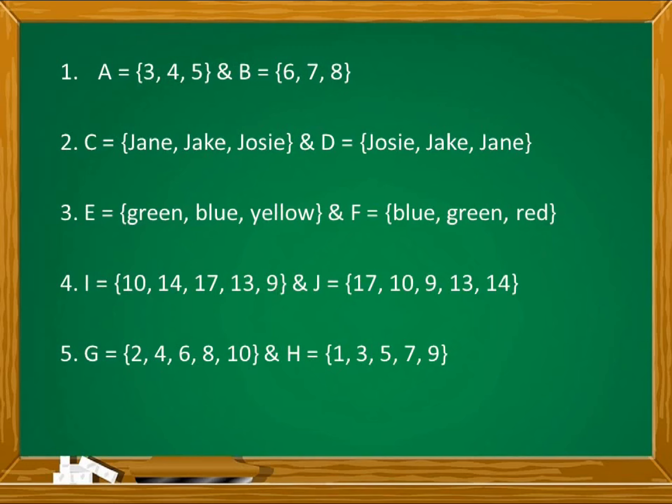Revealing the correct answers, we have for number 1, A and B are equivalent sets. Pareho lang ng bilang or yung number of elements. Number 2, sets C and D are equal sets. Same cardinality o bilang ng elements and same elements. Number 3, sets E and F are equivalent sets. Pareho ng cardinality but not the elements.